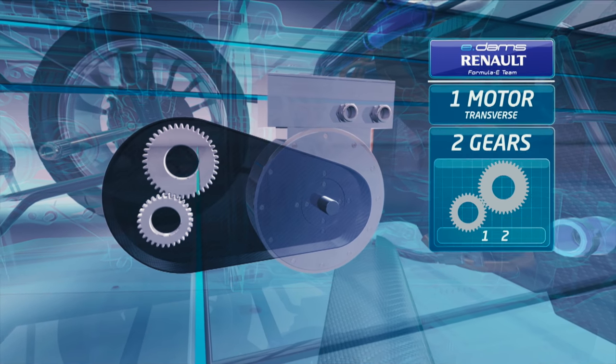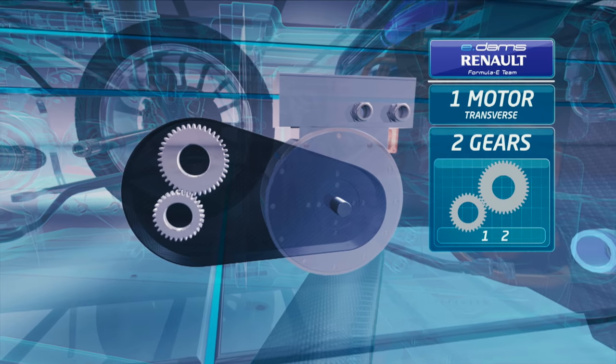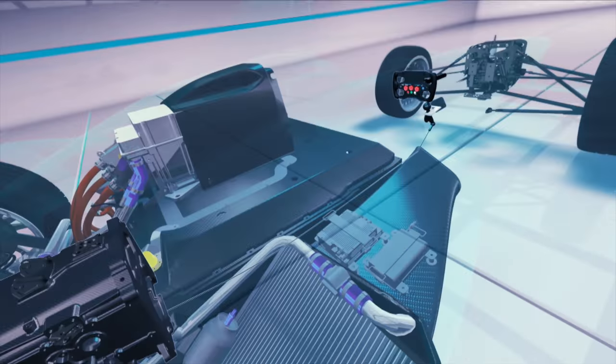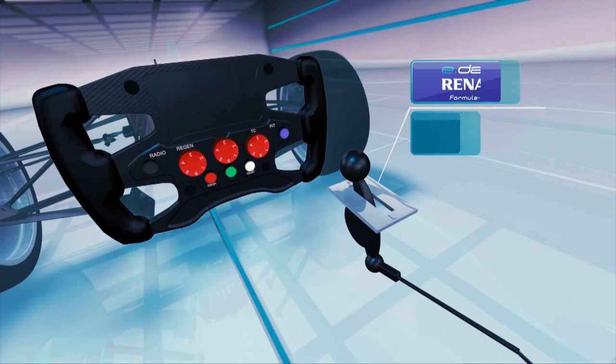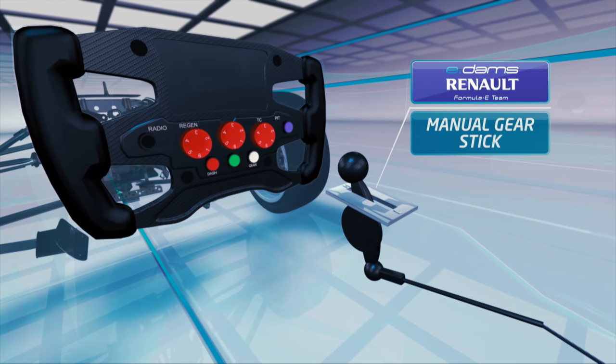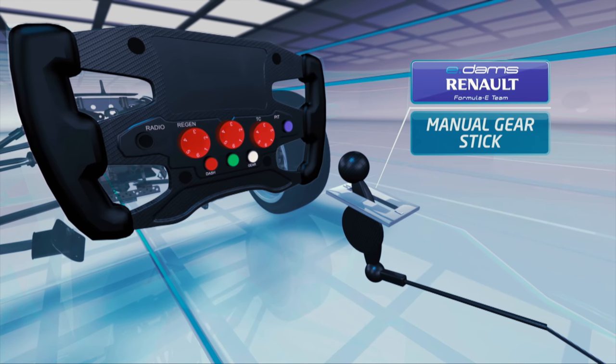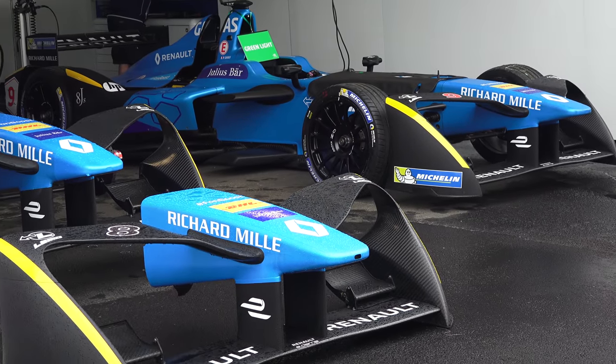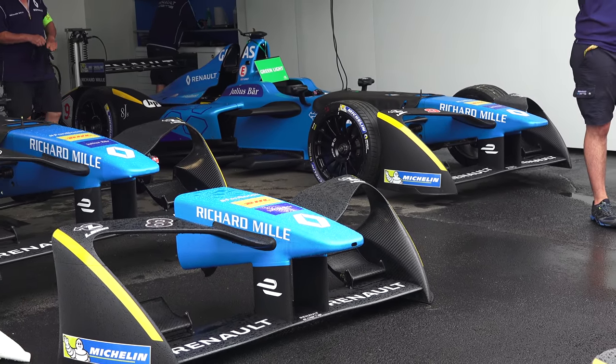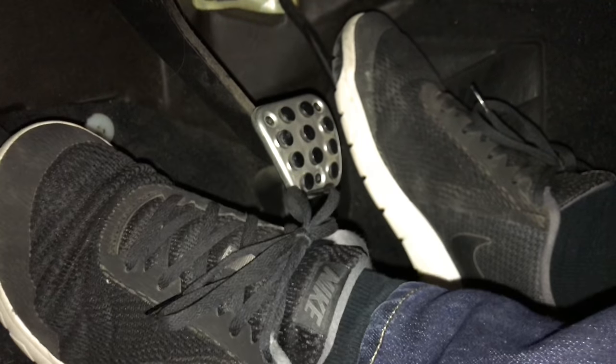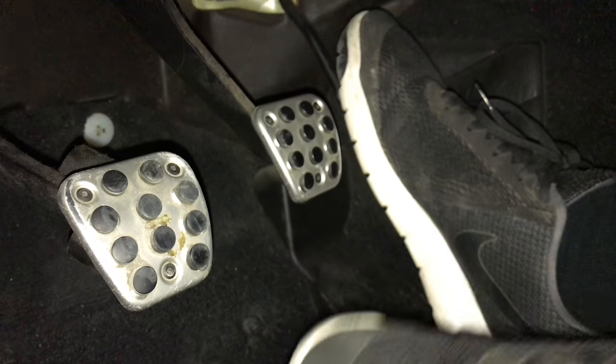Which uses a two-speed gearbox matched with a single transversely mounted electric motor. What's super clever about their setup is that they actually went a bit old-school and incorporated a manual gear stick, using cables and rods to switch between the two gears rather than the pneumatic paddle shifters which other teams are using. Renault's solution is simpler and also lighter as it doesn't require onboard pumps or air tanks for gear shifts. But could this be taken a step further and incorporate a clutch as well for street cars?